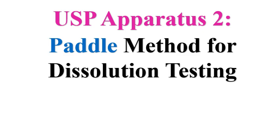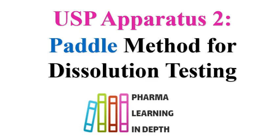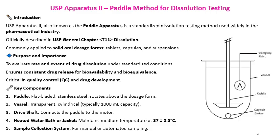USP apparatus 2 is a dissolution apparatus also called the paddle apparatus, and the dissolution method is called the paddle method. There are different apparatus for dissolution testing, like apparatus 1 to apparatus 7, and apparatus 2 is the paddle apparatus. As the paddle is used to move the dissolution media, that's why the name is paddle apparatus. It is a standardized dissolution apparatus and the method is standardized by using the paddle apparatus.